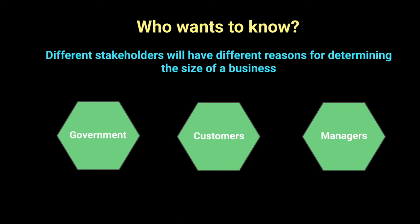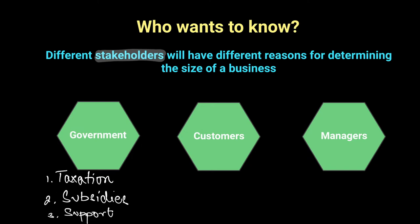When we talk about who wants to know, the concept that keeps coming up — and will constantly appear across our syllabus — is stakeholders. Stakeholders are anyone who is affected by any decision that a business takes. So any action or business activity that has an impact on anyone linked to the business makes them a stakeholder. For example, if a company decides to add more products to its portfolio, customers will be affected. Managers are given budgets by the owners and are interested in how the company is doing. The government wants to know which company is bigger or smaller to decide whom to support and who to tax.